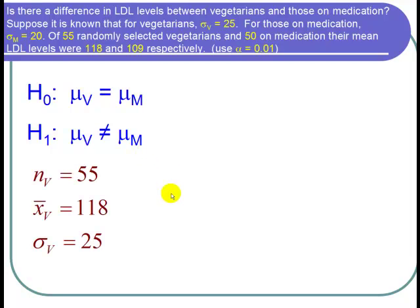So let's write down our cast of characters. We have the sample size for the vegetarians was 55 because we're 55 selected vegetarians. The mean for the sample of vegetarians was 118. And sigma sub v, the standard deviation for the vegetarians, is 25.